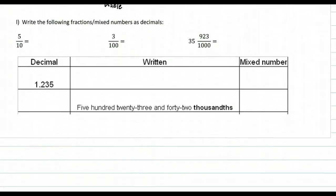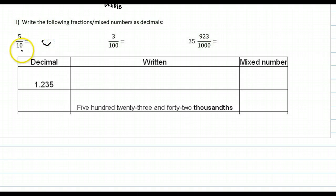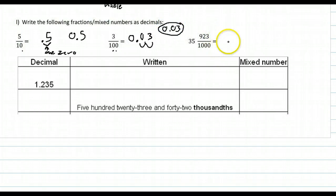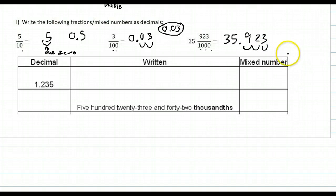Now write fractions and mixed numbers as decimals — we're going in reverse. Before we gave a zero for every decimal place; now we give a decimal place for every zero. So one zero means one decimal place: put the 5 in there and the answer is 0.5. Two zeros gives two decimal places, and it still needs to say three — so place it correctly. If you have a whole part, put that in front, then count the zeros for decimal places and place the numerator inside. That gives you 35.923.